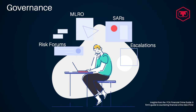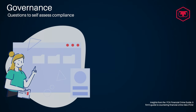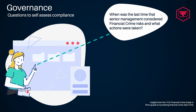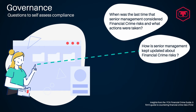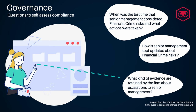Some questions to self-assess if your firm is in line with regulatory compliance requirements on financial crime governance: When was the last time that senior management considered financial crime risks, and what actions were taken? How is senior management kept updated about financial crime risks? What kind of evidence is retained by the firm about escalations to senior management?